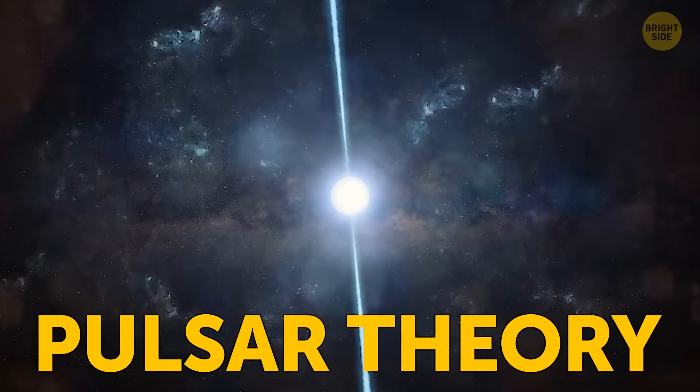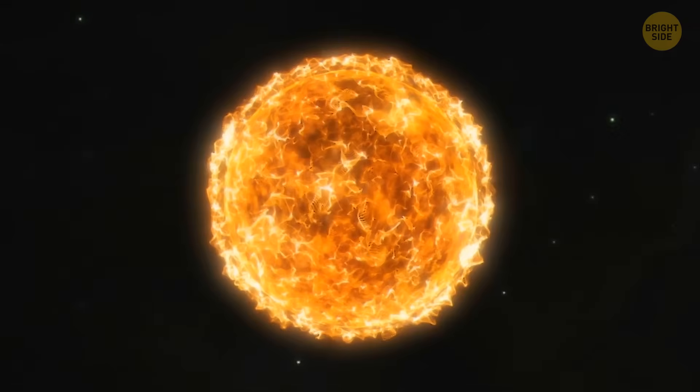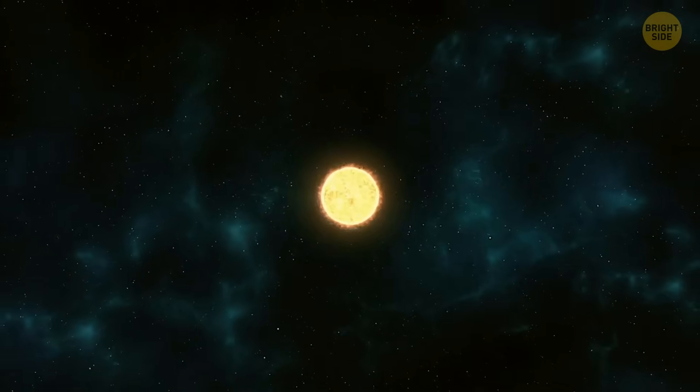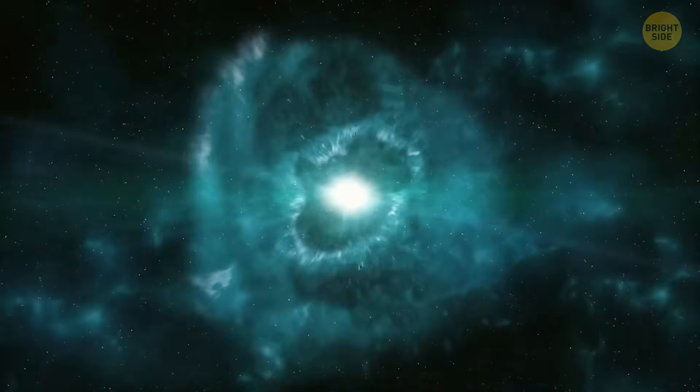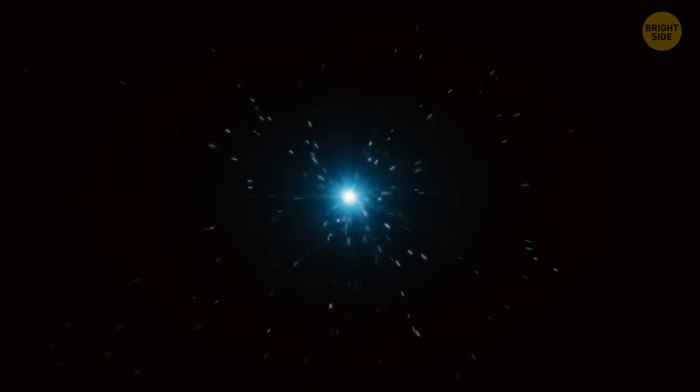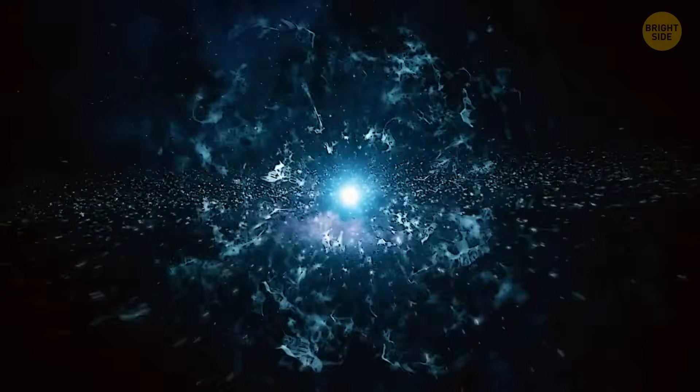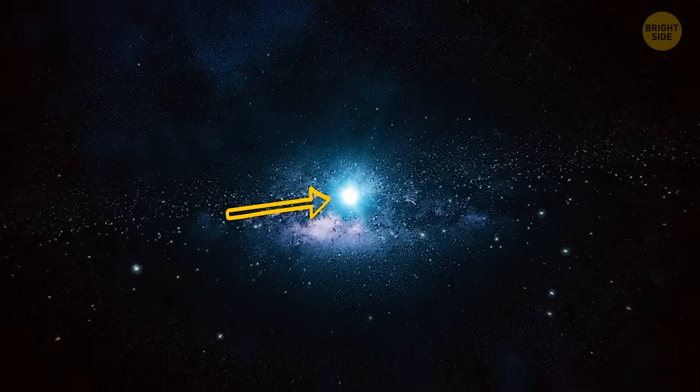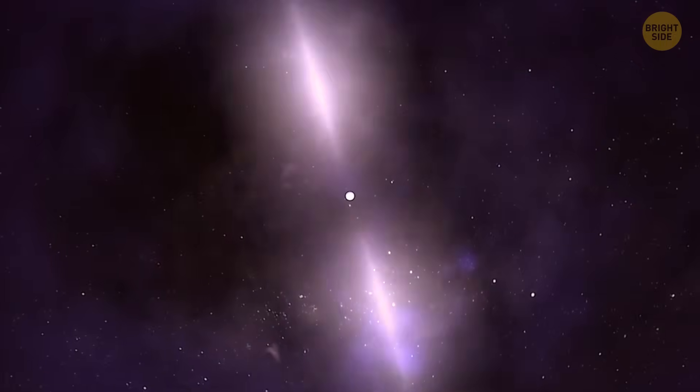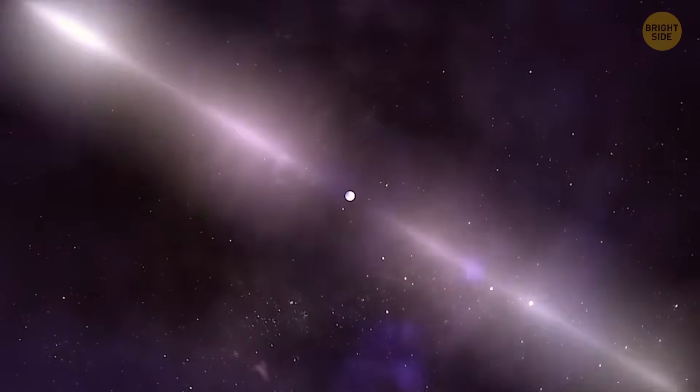The first one is the pulsar theory. Imagine a huge star in space, much bigger than our Sun. Sometimes, these big stars finish their life journeys in a spectacular event called a supernova. When this happens, the star's core collapses, becoming supercompact, as if you're squeezing all the stuff from that star into a tiny space. That tiny, superdense core is called a neutron star. Some of these neutron stars are extra special. We call them pulsars. They get their name because they seem to pulse with energy, like a space lighthouse.